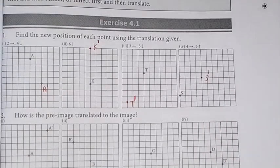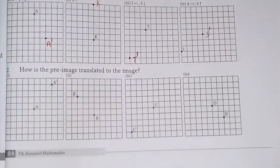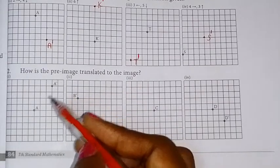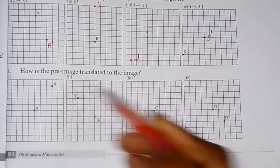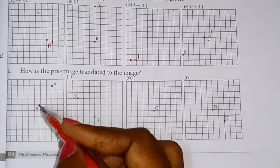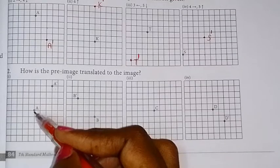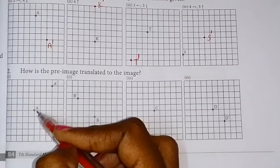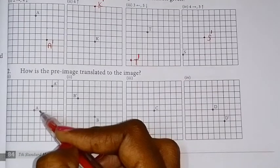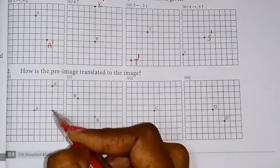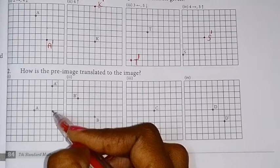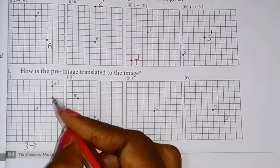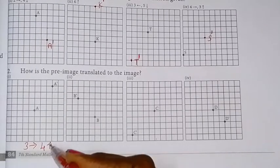Let's see. How is the pre-image translated to the image? So, pre-image A to A'. 1, 2, 3, 3 units right side move. 3 units right side: 1, 2, 3. 4 units upwards. So, here is A'.